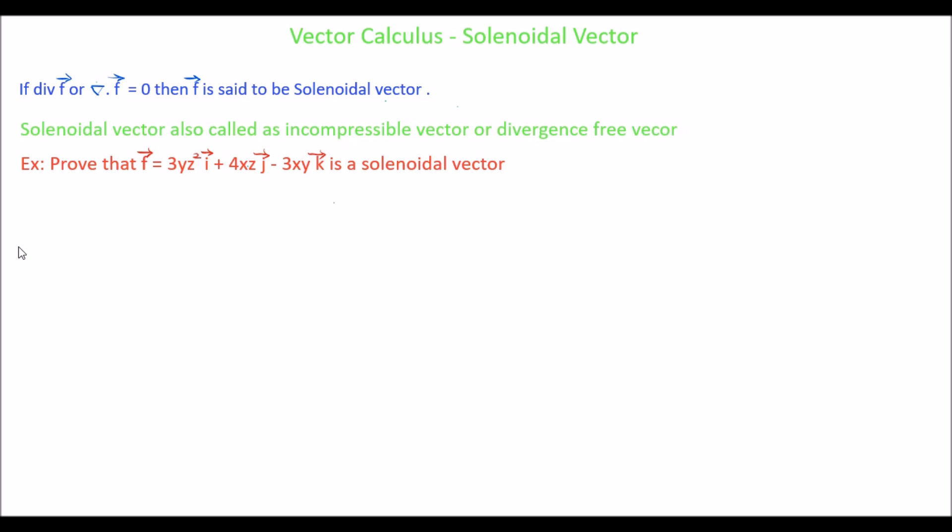Let's solve this example. The given function has three variables: x, y, and z. So the divergence of f vector is ∂f₁/∂x plus ∂f₂/∂y plus ∂f₃/∂z.